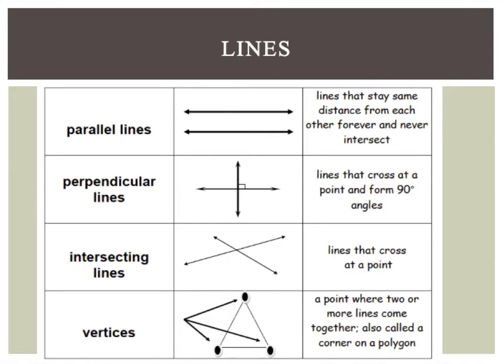We also have these things called vertices. Vertices are points where two or more lines come together. It's also called corners on some types of polygons. So, remember we said it's kind of like the elbow of the angle. So, it's the point where the two lines meet.